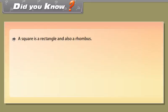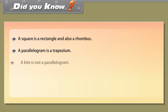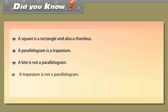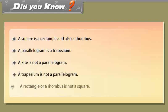Did you know? A square is a rectangle and also a rhombus. A parallelogram is a trapezium. A kite is not a parallelogram. A trapezium is not a parallelogram. A rectangle or a rhombus is not necessarily a square.